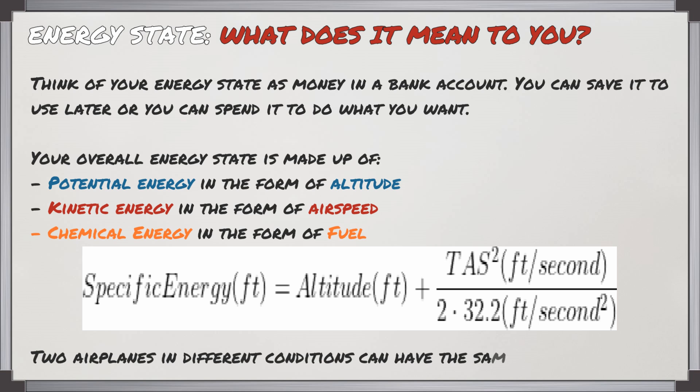I've included this formula here to show you how your energy state is related to your altitude and your airspeed, and also that you can actually have two airplanes at different altitudes and airspeeds but they could have the same energy state.